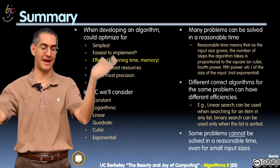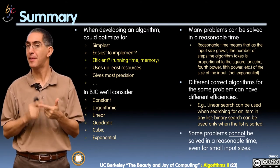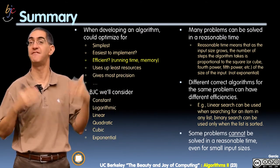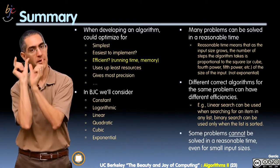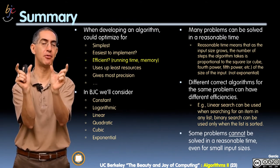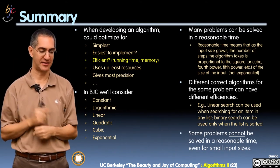In summary now, when developing an algorithm, you could optimize for one of many things. We talked about efficiency, which is both number of steps and memory as the thing you might be optimizing for.